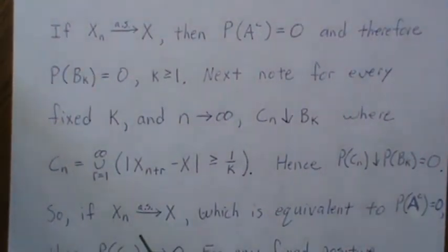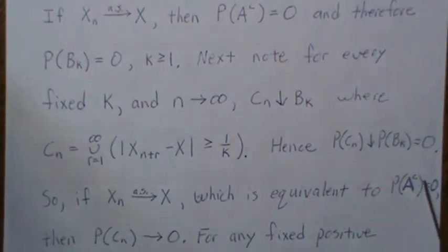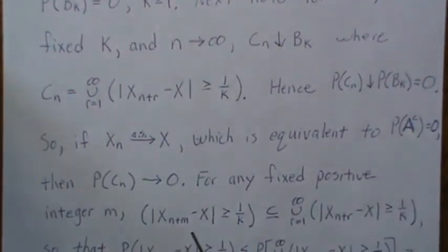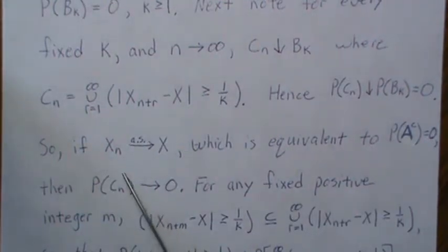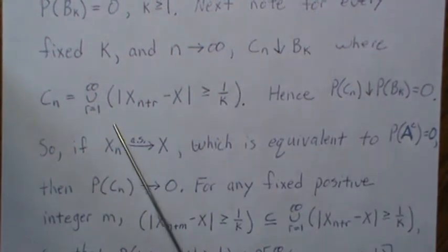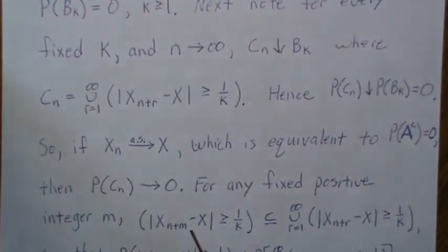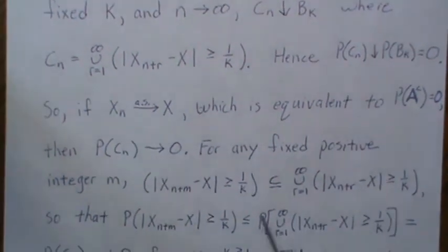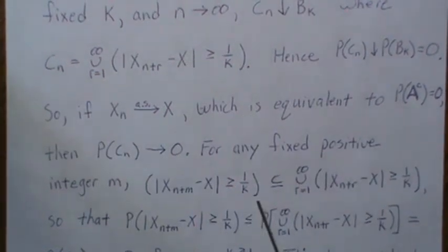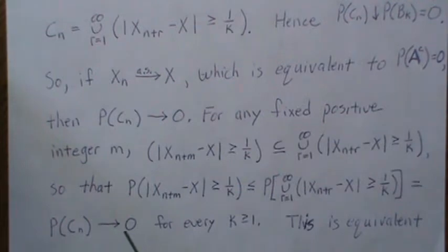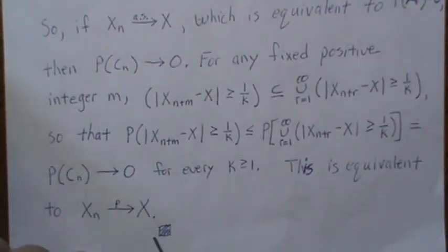So if Xn converges almost surely, which is equivalent to the probability of A complement equaling zero, then the probability of cn goes to zero. For any fixed positive m, if we look at cn - this is the union over all these - and if we just look at one particular set, that has to be a subset of the union of them. That means the probability of this happening is less than or equal to this happening. The probability of this happening is the probability of cn, which goes to zero. So this probability goes to zero, and this is equivalent to saying that Xn converges in probability to X.